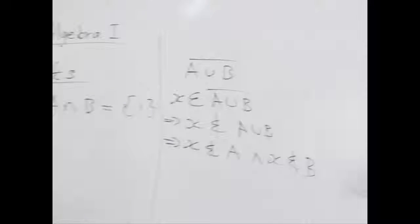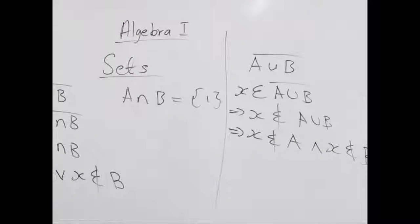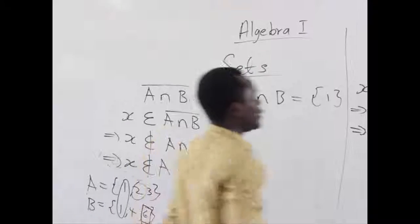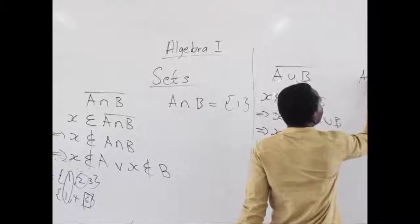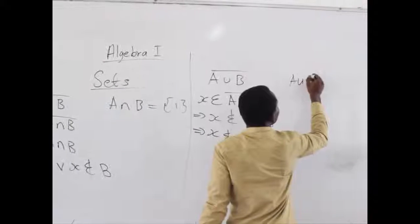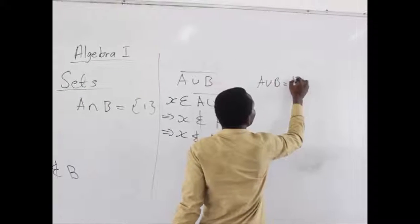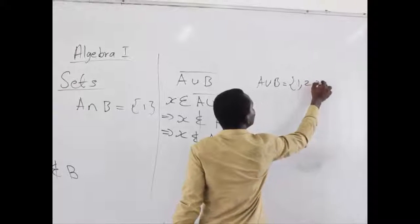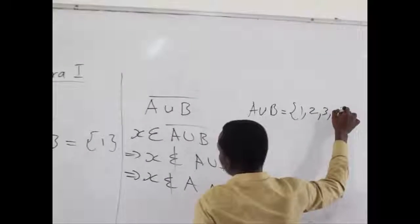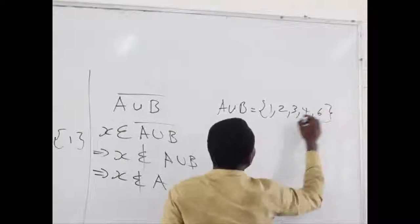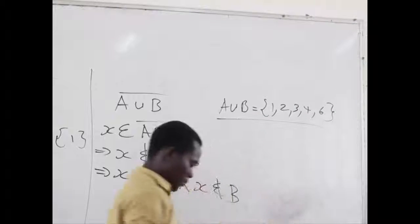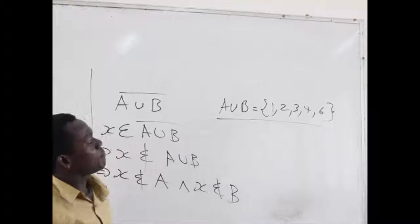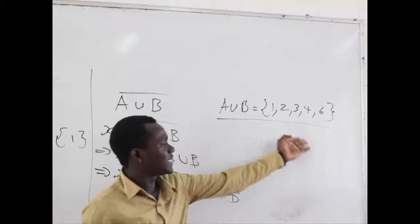For example, when we take A union B here, we are going to get A union B equals 1, 2, 3, 4, and 6.